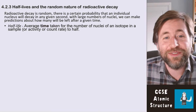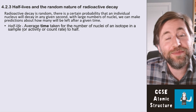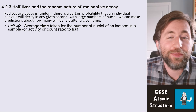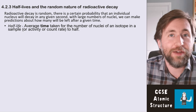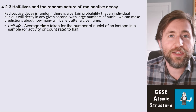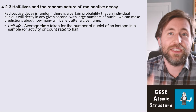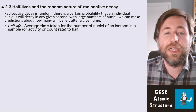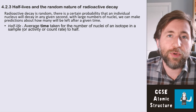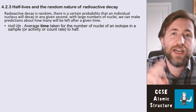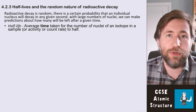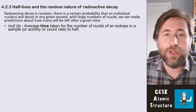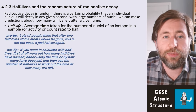We use something called the half-life. The half-life is the average time taken for the number of nuclei of an isotope in a sample, or the activity or the count rate, to half. The half-life is the time taken for something to half — that's a really key point. The half-life is the average time it takes for a number to half. It is not what is half the number, which is an often confused thing that people get.